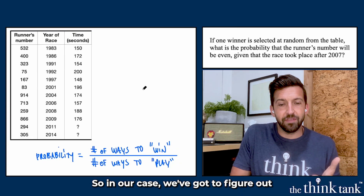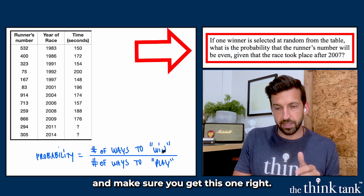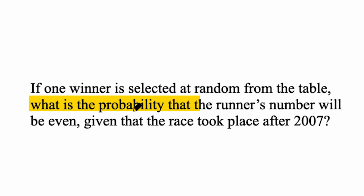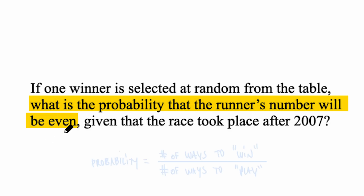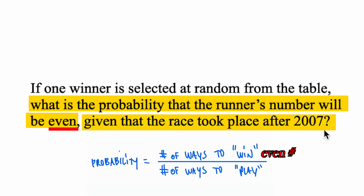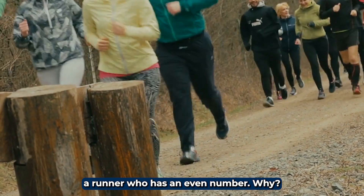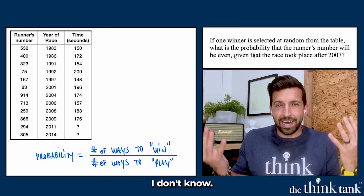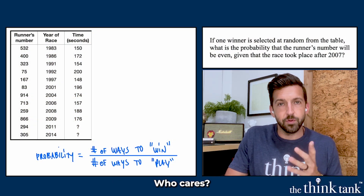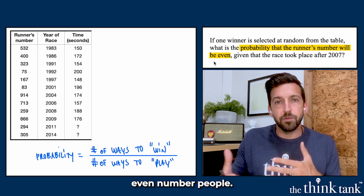We've got to figure out what we mean by win and what we mean by play. The problem asks: what's the probability that the runner's number will be even? So a winner is somebody who's got an even number. Given that the race took place after 2007 is a bit harder language, but let's start with the even number part. We're calling a winner a runner who has an even number.